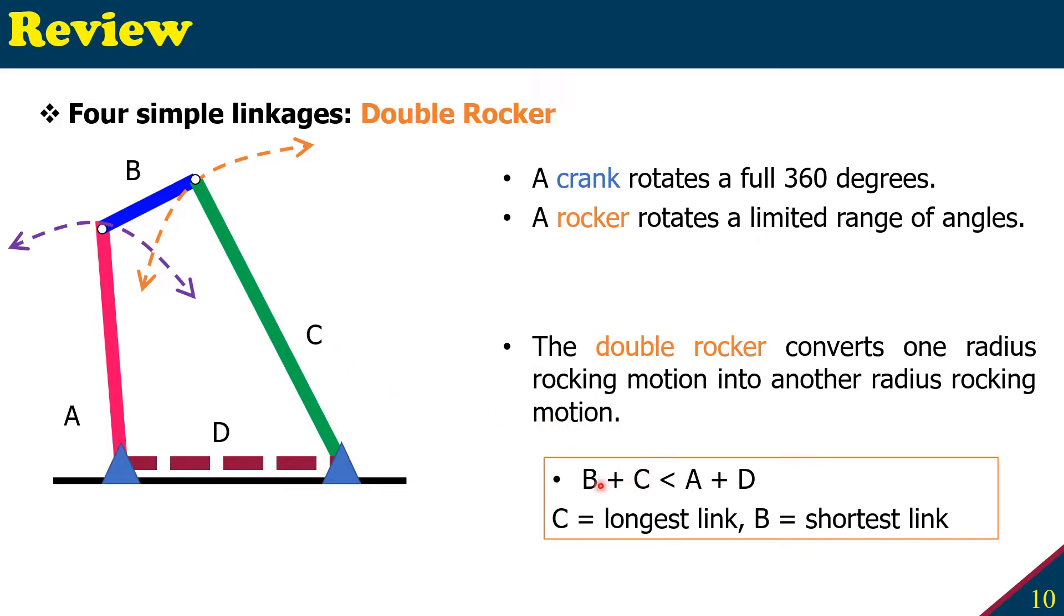And if you sum the length of B and C, it will be always shorter than the other two arms. Again, I put it in the dot mark because we don't need a physical frame here, but you know the length of the fixed point. That is the length of the frame, the fourth bar of the four bar linkage.